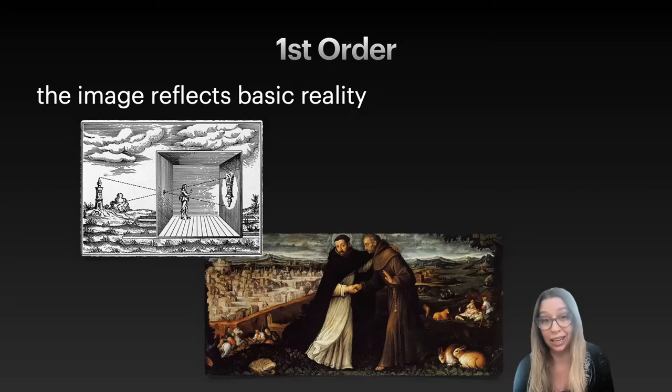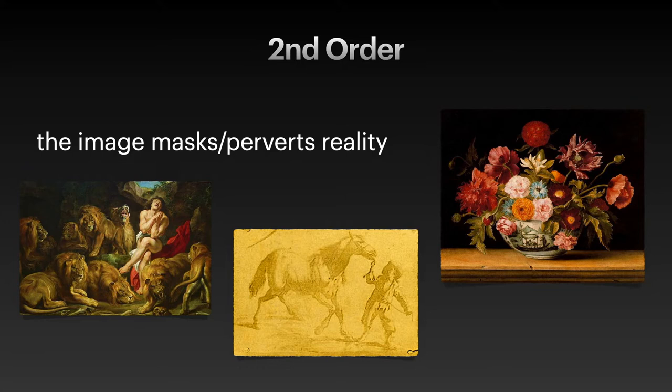In the second order, the image masks and perverts a basic reality, much like an imitation or a counterfeit copy of reality. This stage emerged in the early modern period, where a competition for the meaning of signs begins. Simulacra aimed to restore an ideal image of nature, and in this way the true originals underlie the fake. There is an underlying reality, but it's been changed and modified in some way.